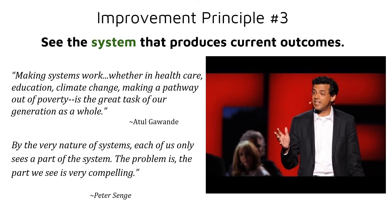This leads into the next improvement principle: seeing the system that produces the current outcomes. Every system is perfectly designed to get the results it gets. If we're not seeing the results we want, we have to examine, analyze, and understand how the system is working in order to make improvements. In this TED talk by Atul Gawande, he does a good job of describing how systemic efforts can aim toward positive change.